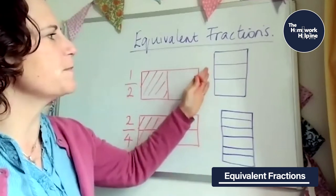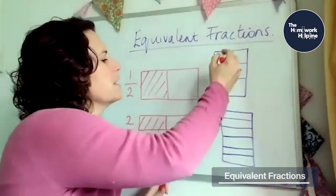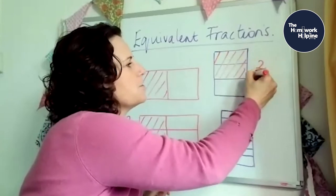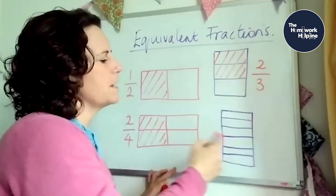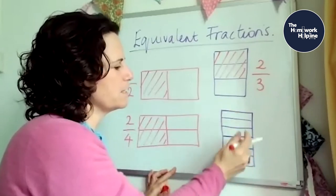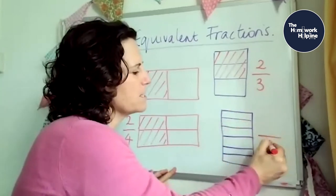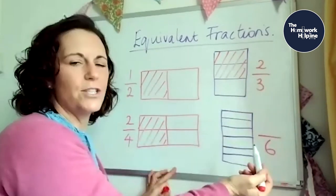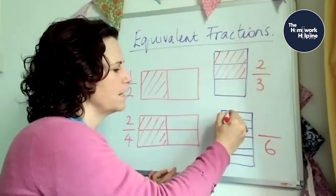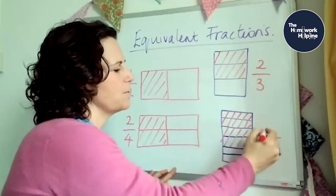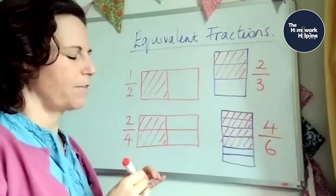Exactly the same on this one. This one's been divided into three equal parts. So if I have two of those, that would be two thirds. Now to get the same amount here, I would need to, these are cut into sixths. So we're talking about how many sixths is the same as two thirds? Well, I need that's one third, and then two thirds. So I need four sixths.